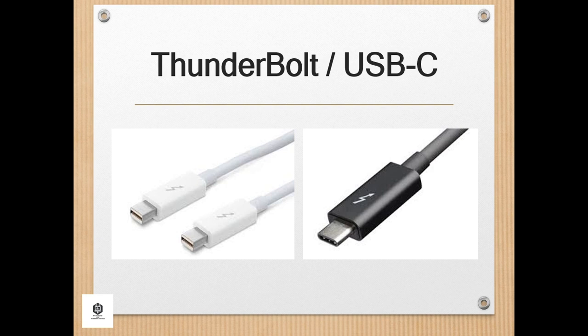Thunderbolt and USB-C are mostly seen on laptops and Apple Macs. These cables are high-speed and capable of carrying data, video, and other information. There are two current types of Thunderbolt. The older Thunderbolt 2 can be confused with mini DisplayPort as they look identical — the only visual difference is the icon on the port. Thunderbolt 2 has a lightning symbol and carries data and video, while the mini DisplayPort carries only video. Thunderbolt 3, also known as USB-C, is used for Apple Macs.